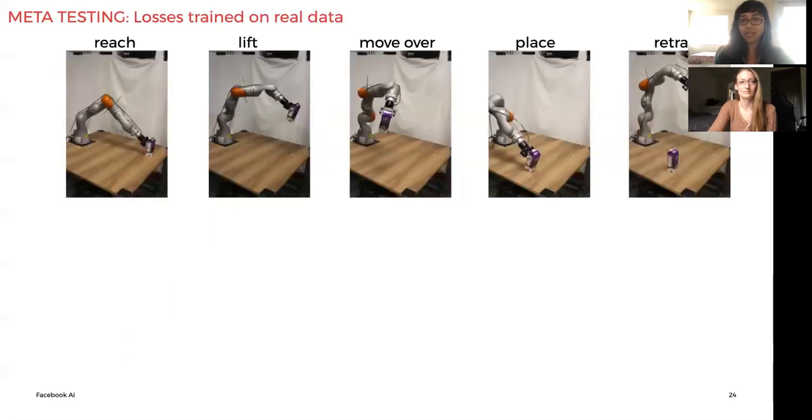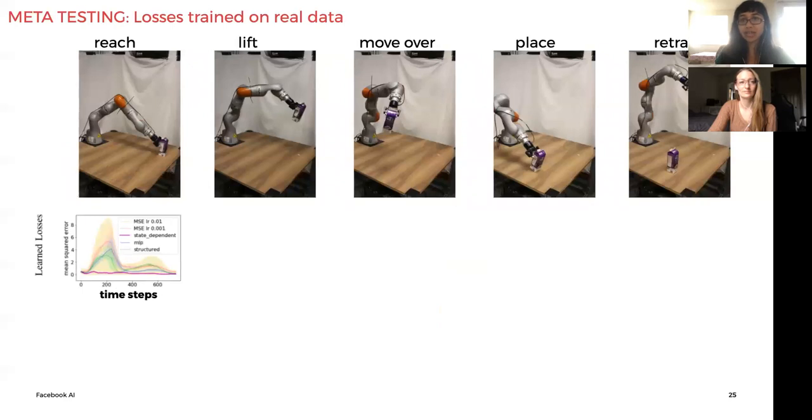During the test time of our experiment, we adapt our model to five different motions of a pick-and-place task. In these plots, the x-axis represents the number of rollout steps and the y-axis shows the MSE of the model predictions when optimized with different learned or standard losses, all trained with a stochastic gradient descent optimizer.